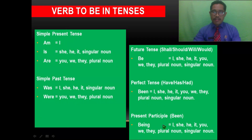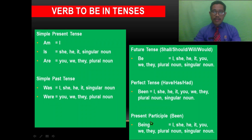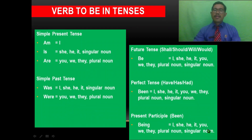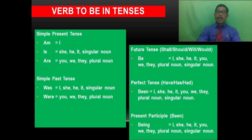Di present participle, biasanya bentuknya continuous — ada kata 'sedang'. Ketika ada kata 'being', maka harus ada 'being' diikuti kata kerja bentuk ketiga. Jadi, penggunaan verb to be atau kata kerja bantu dalam tenses berpengaruh pada passive voice.